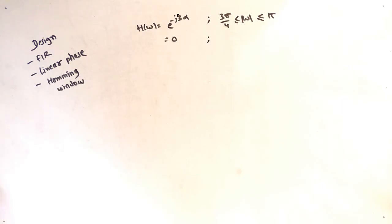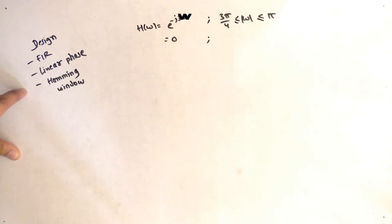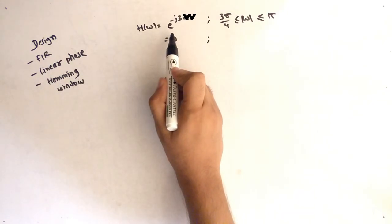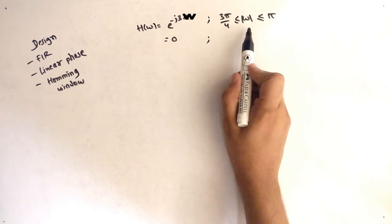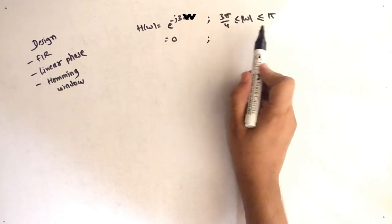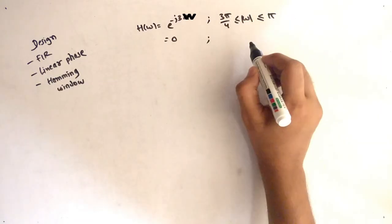Hello friends, today our topic is to design a FIR filter which is a linear phase filter using a Hamming window. The question given is H = e raised to minus j·3·α and the cutoff frequency is between 3π/4 to π.